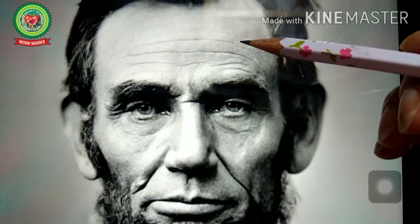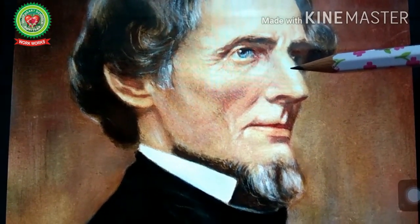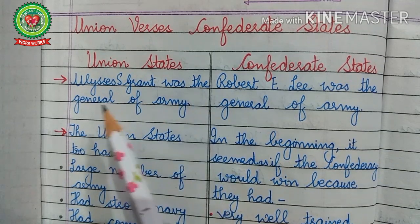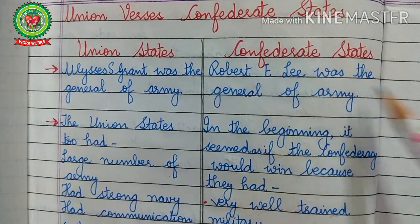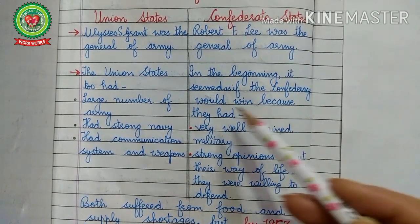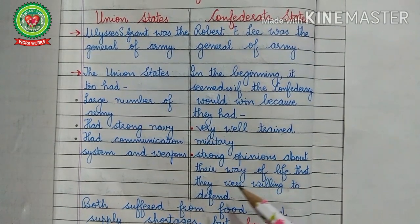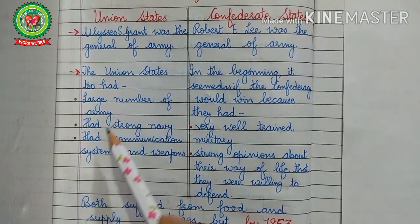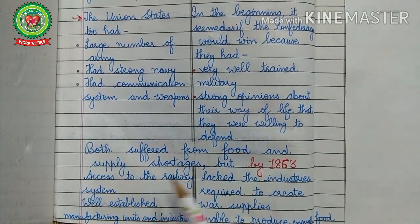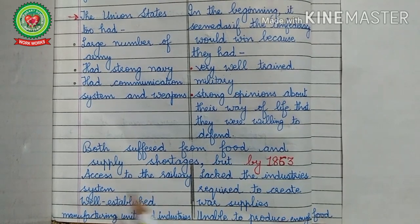Abraham Lincoln was chosen as president of the Union states and Jefferson Davis as president of the Confederate states. In the beginning it seemed as if the Confederacy would win, because they had very well-trained military and strong opinions about their way of life that they were willing to defend. On the other hand, the Union states had a large number of army, a strong navy, a communication system, and weapons. During the war both suffered from food and supply shortages, but by 1863 the Union states had access to the railway system.